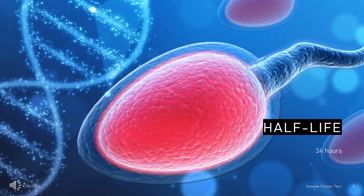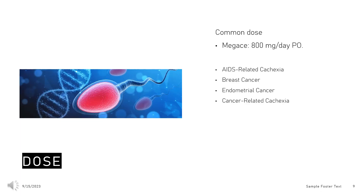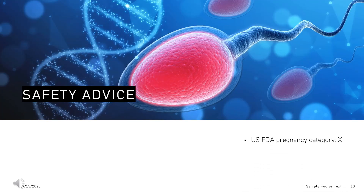Half-life: 34 hours. Dosing — AIDS-related cachexia: Megace 800 mg/day PO; Megace ES 312.5 to 625 mg/day PO. Breast cancer: 40 mg PO. Endometrial cancer: 40 to 320 mg/day PO in divided doses; evaluate efficacy after 2 months of treatment, up to 800 mg/day may be used. Cancer-related cachexia (off-label): 480 to 600 mg/day PO.